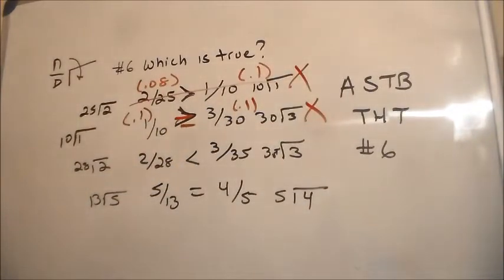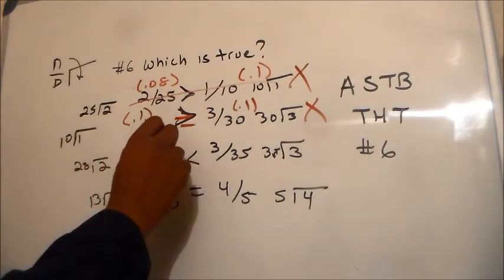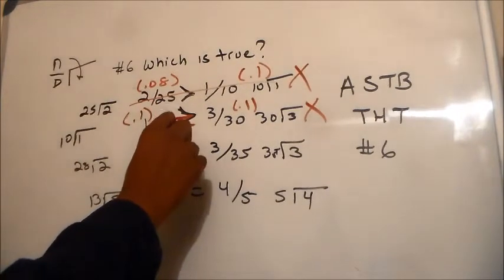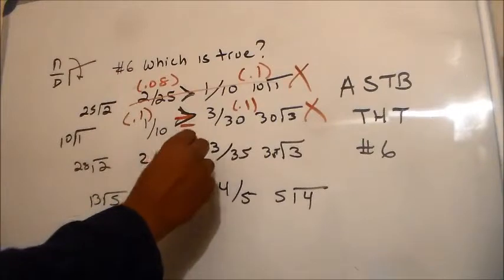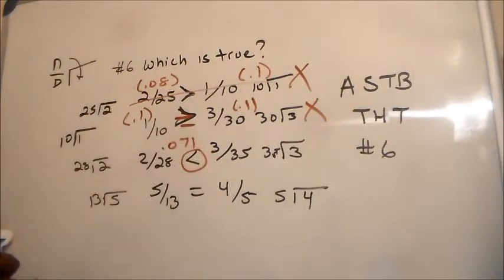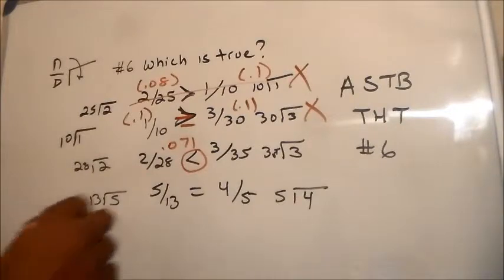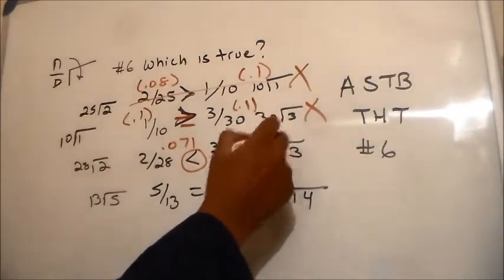Now if we took 2 divided by 28, we get point 0 7 1. And then less than - we want to see if this is less than 3 divided by 35. Point 0 8. Point 0 8. That is true.